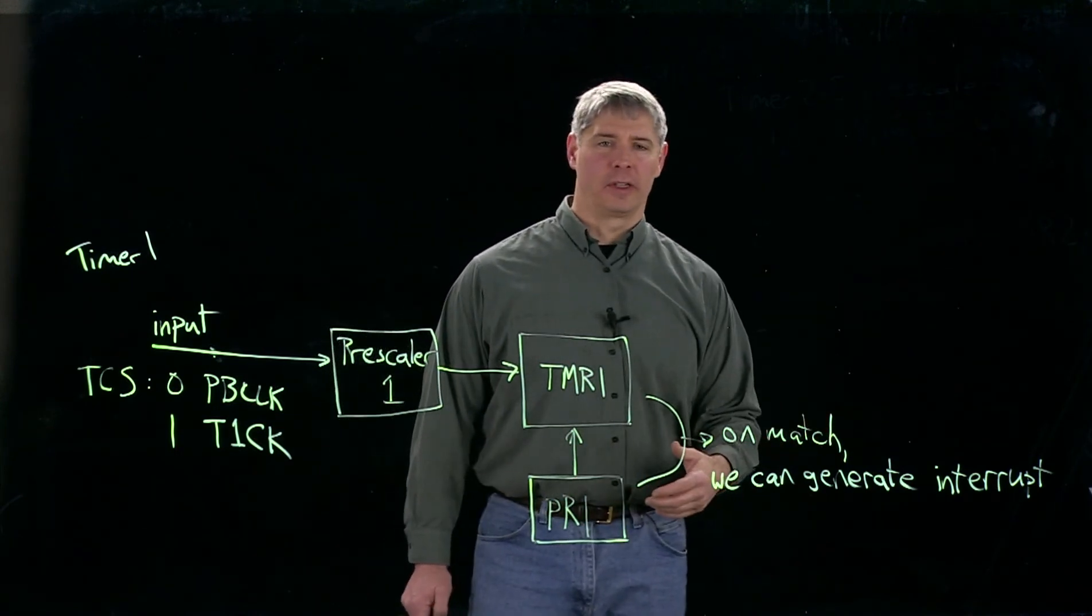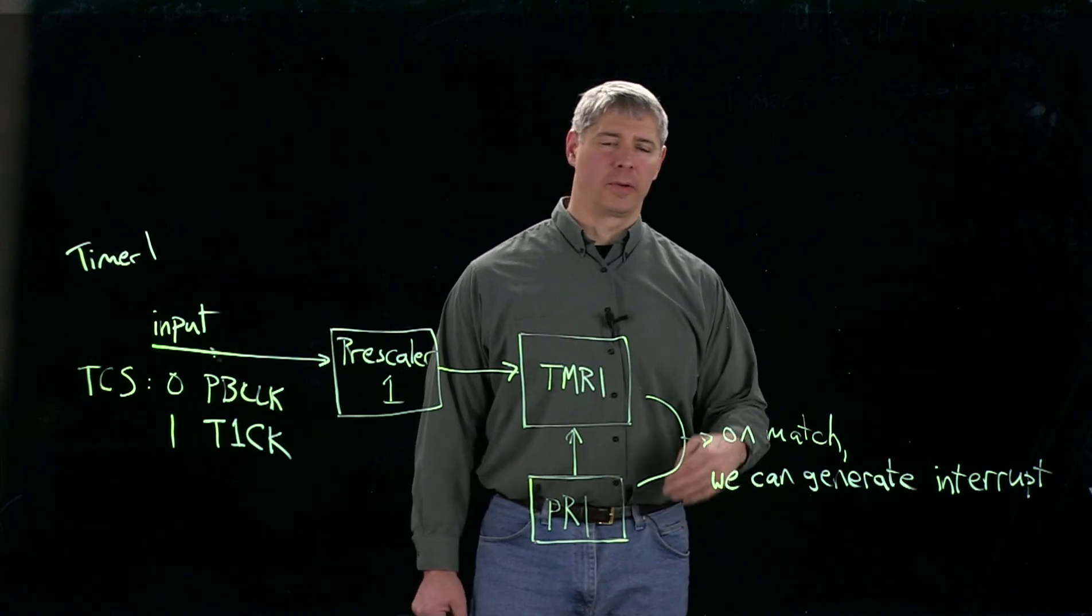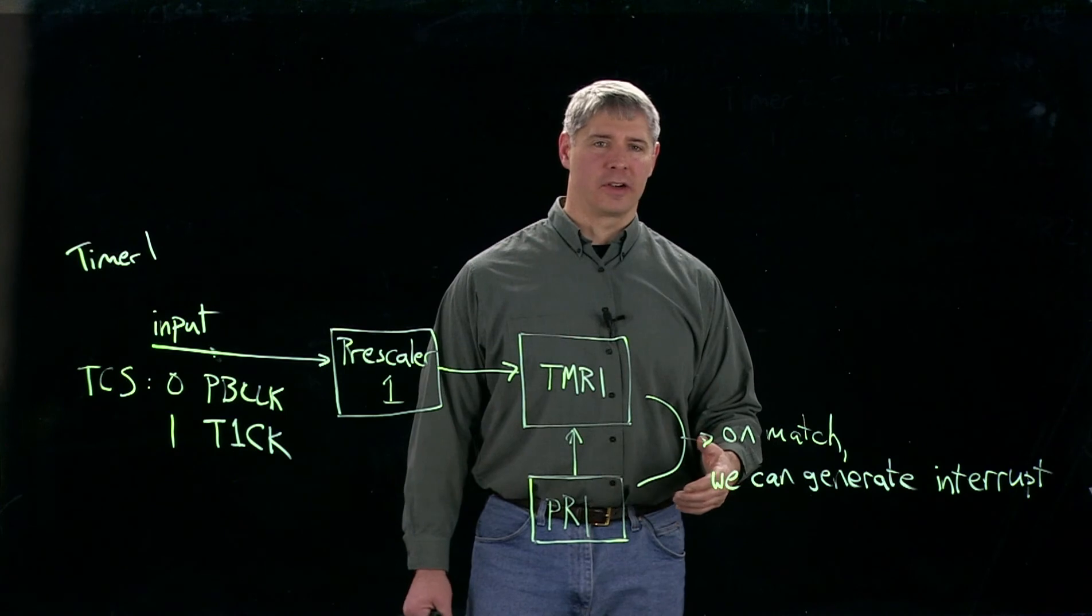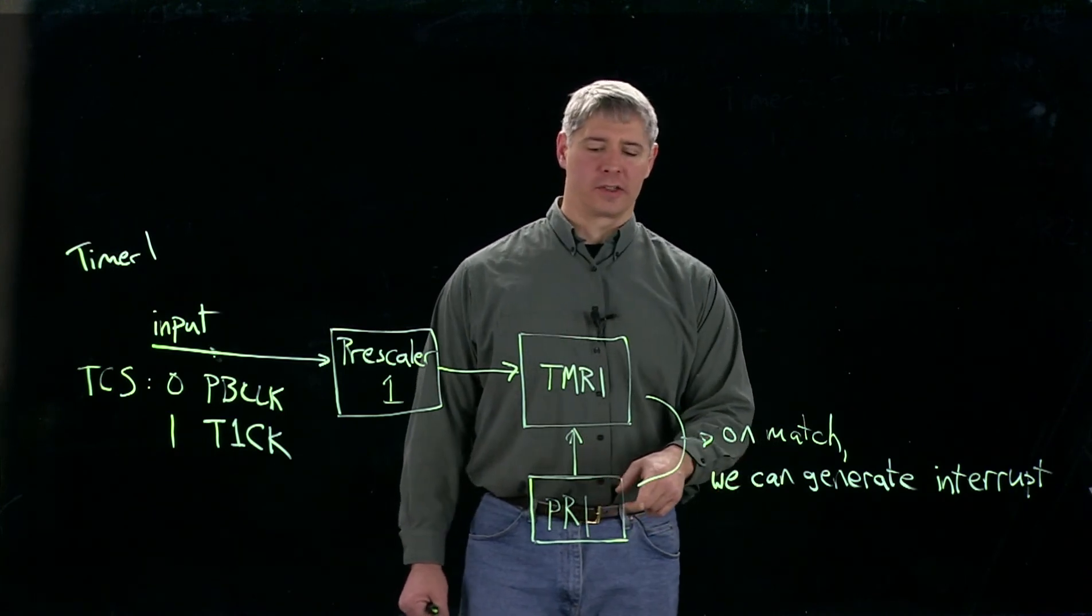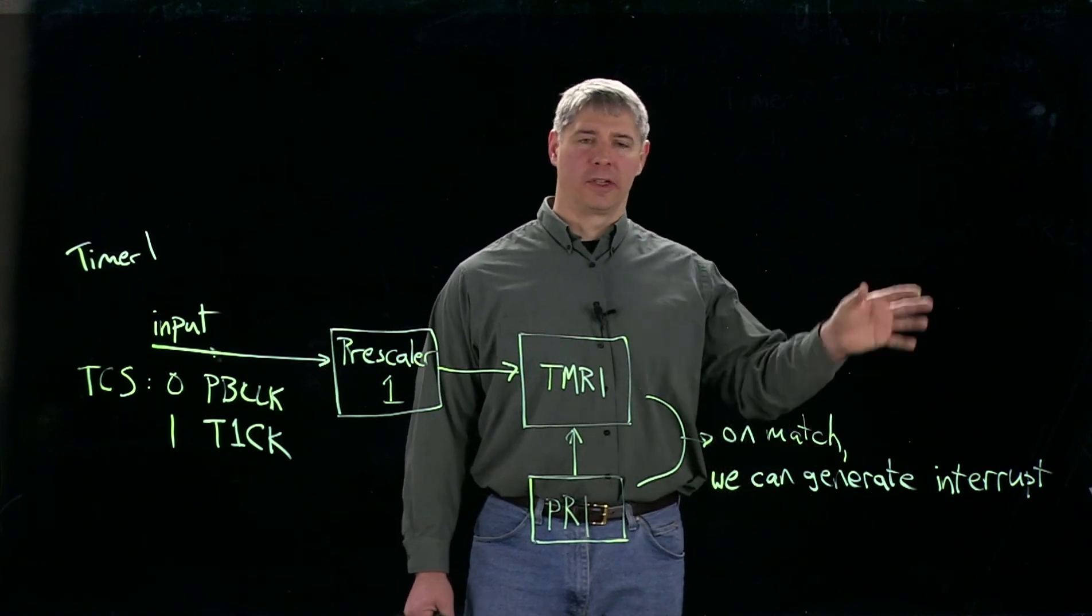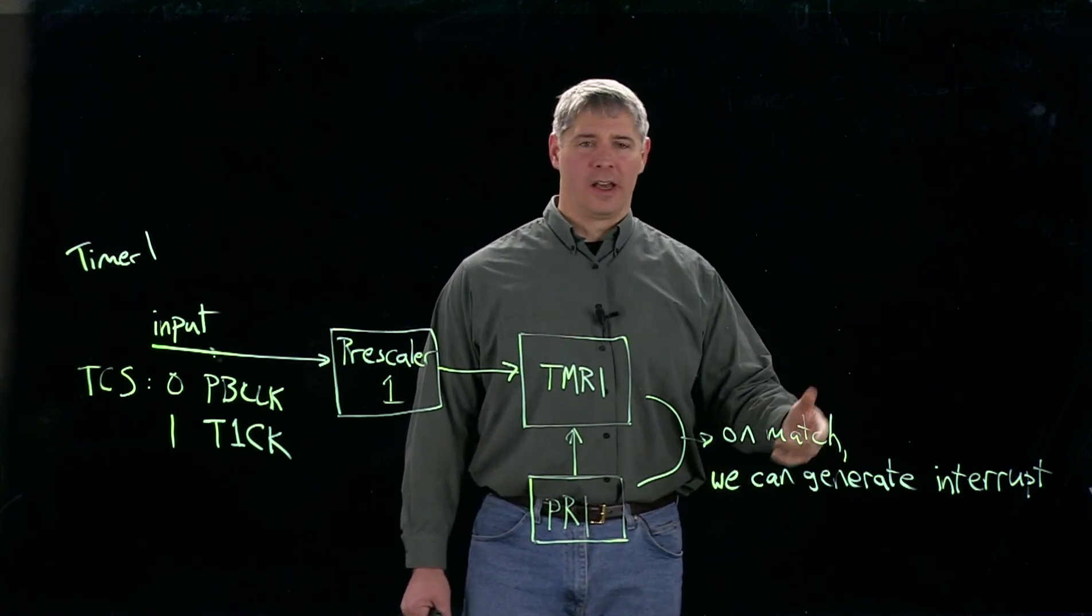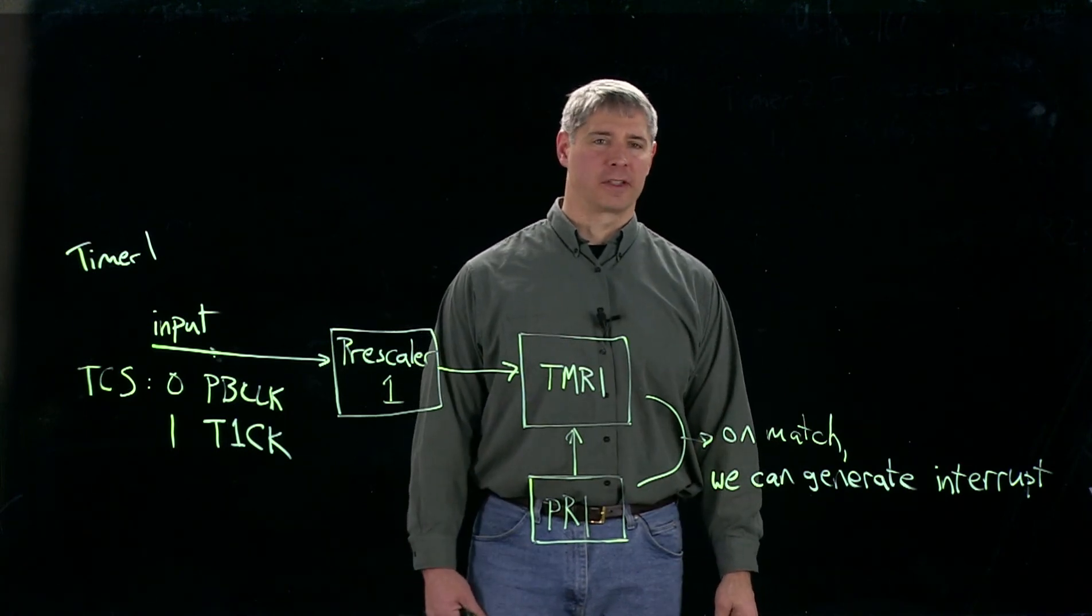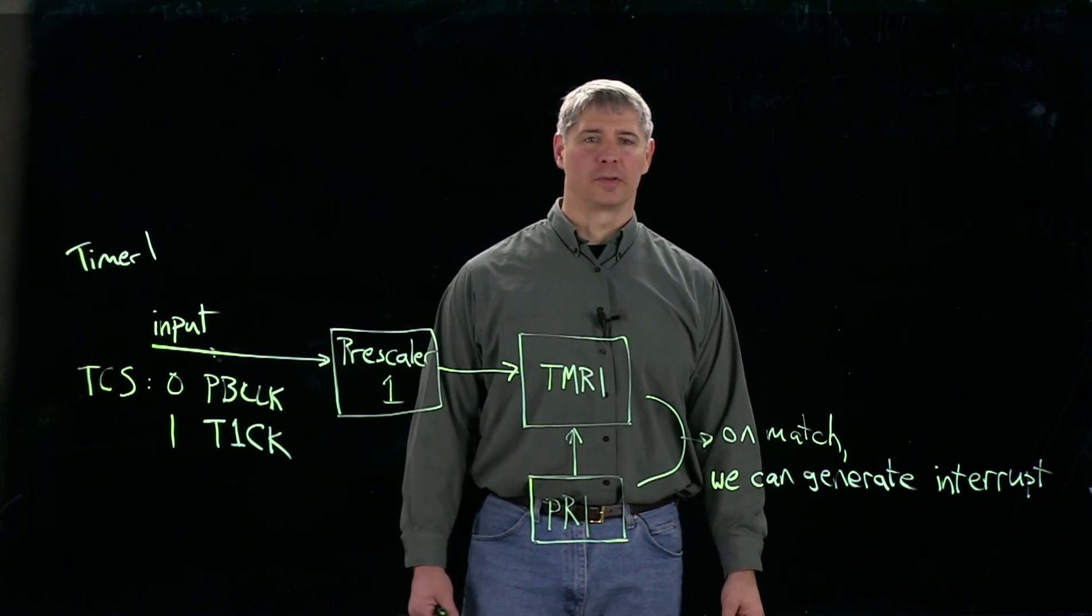And one reason we might want to do that is if we're doing real-time control and we want to generate an interrupt at a fixed frequency, maybe at a thousand hertz, then we can set the period register so that there's a match every one millisecond. And then we generate an interrupt, jump to an interrupt service routine that does something and then returns. So this is a very common use of timers to generate fixed frequency control routines.